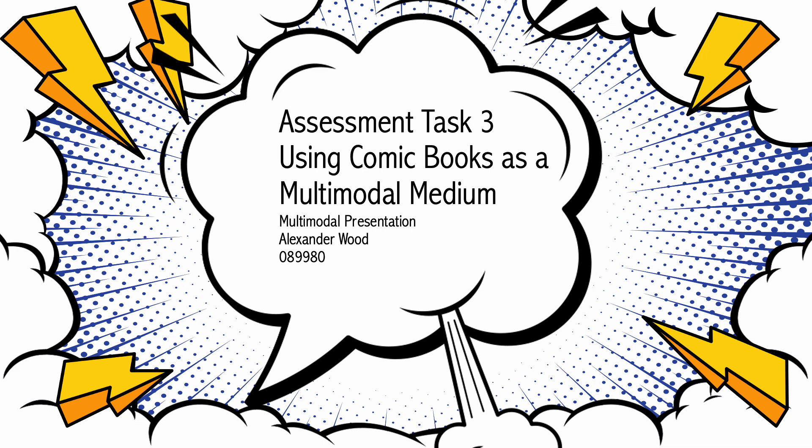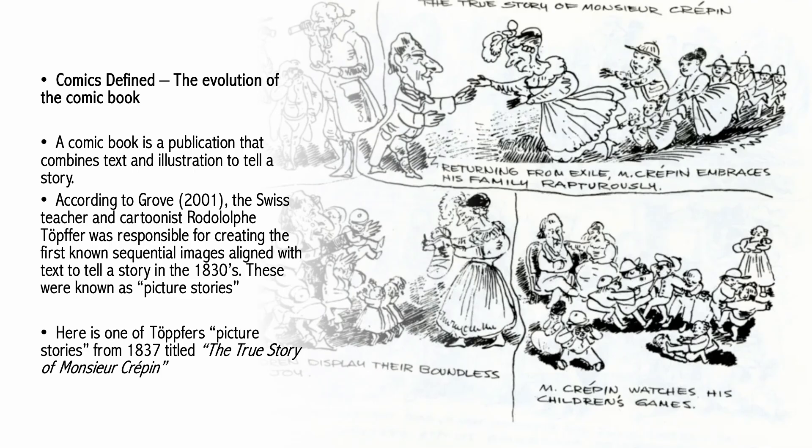Assessment Task 3: Using comic books as a multimodal medium. A comic book is a publication that combines text and illustration to tell a story. According to Grove, the Swiss teacher and cartoonist Rodolphe Topfer created the first known sequential images aligned with text to tell a story in the 1830s. These were known as picture stories. The creation of sequential images first evolved into comic strips in newspaper publications in the early 1900s before becoming the action comics we know today.